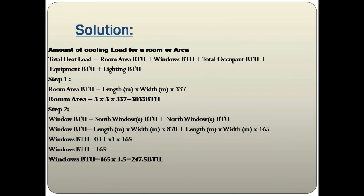The total heat load formula is: Room Area BTU + Windows BTU + Occupants BTU + Equipment BTU + Lighting BTU. Step 1 — Room Area BTU = length × width × 337 = 3 × 3 × 337 = 3,033 BTU.